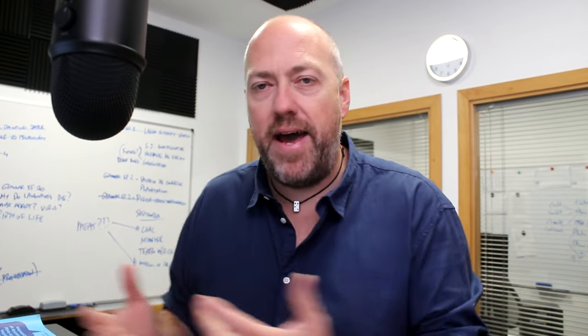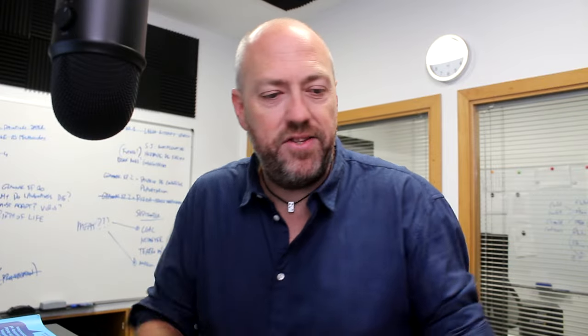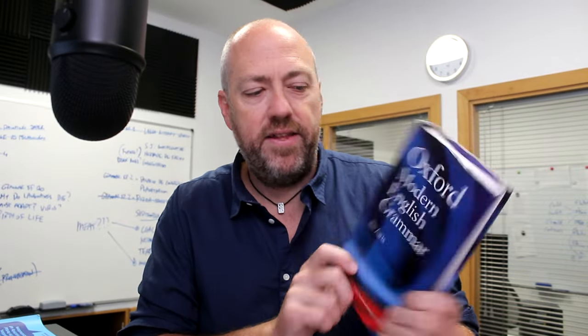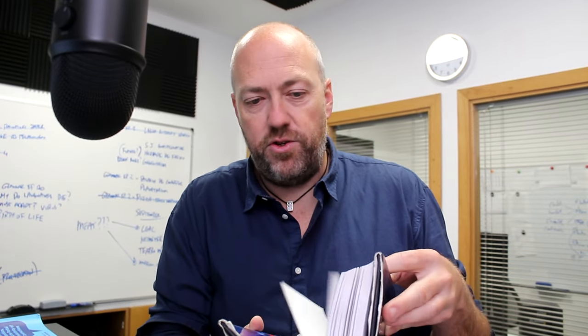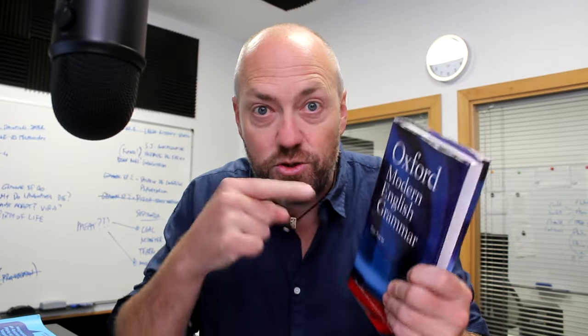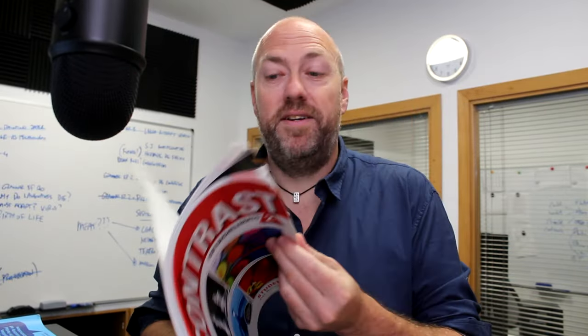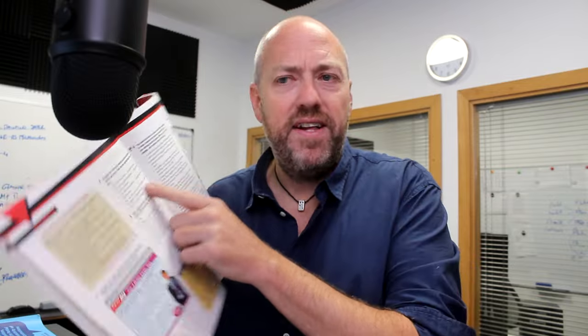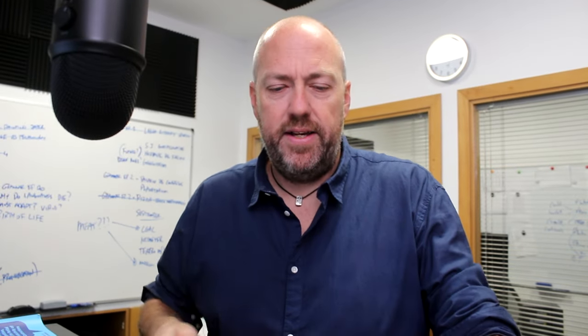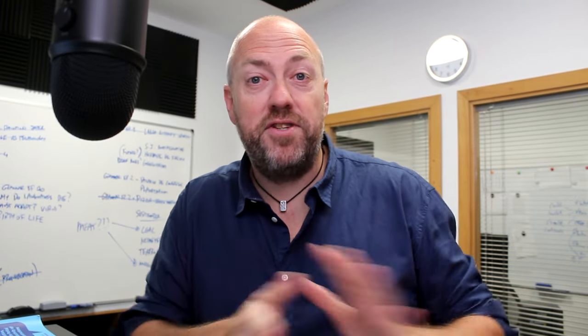When people think about grammar and what grammar is, they might think about something like the Oxford Modern English Grammar — a really dense, 200 to 300 pages of description about the English language. Or maybe the stuff that they find in their workbook — fill-in-the-blanks or descriptions about constructions. I have to wash my hands after touching a workbook. Dirty thing!